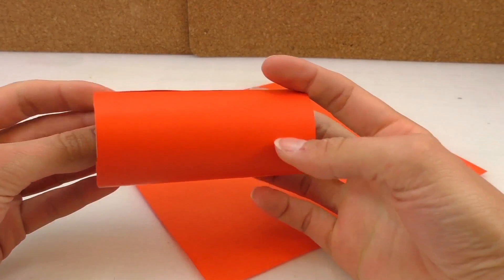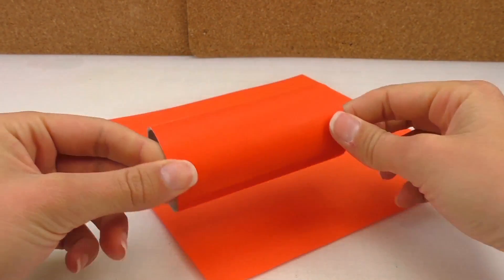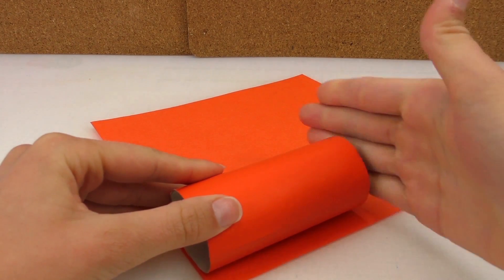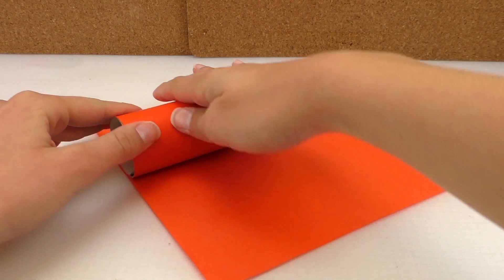First we're going to connect the orange paper to the toilet roll, so basically what I've done, I just cut out a strip in the length and the width of the toilet roll, and then connected it to it.